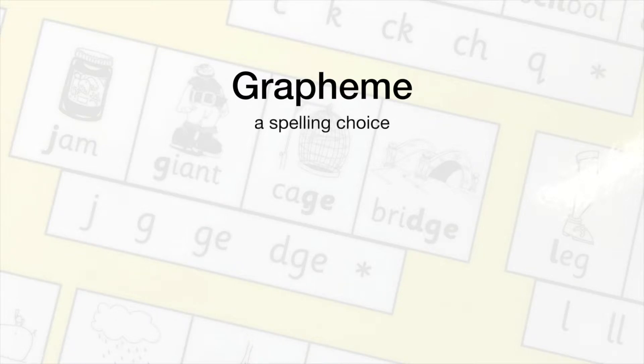Grapheme. A spelling choice — either a graph, digraph, trigraph, or quadgraph.